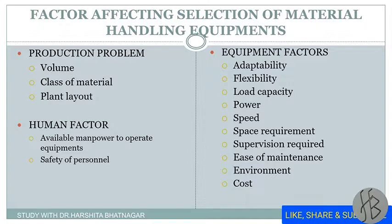These are the important equipment factors to consider when purchasing material handling equipment. It should be adaptable to your factory and flexible — meaning if it is used for one job, it should also be usable for another job when spare. Load capacity should be high, power consumption low, and speed adjustable as needed. Space requirement, supervision level, ease of maintenance, environmental impact, and cost are all important considerations.